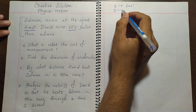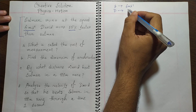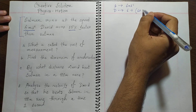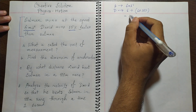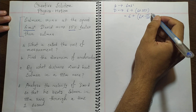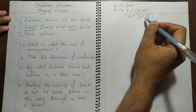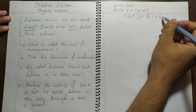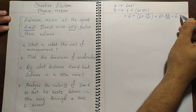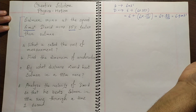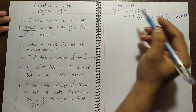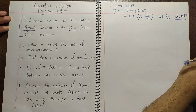We can say that David's speed is 6 plus 6 times 15 over 100. So 6 times 15 equals 90, giving us 6 plus 90 over 100, which is 0.9. So fully this is 6.9 meters per second. From the data, Salman runs at 6 m/s and David runs at 6.9 m/s.